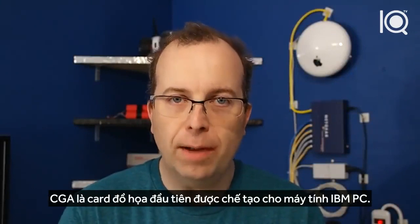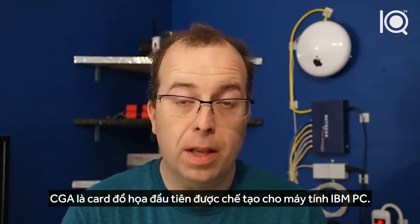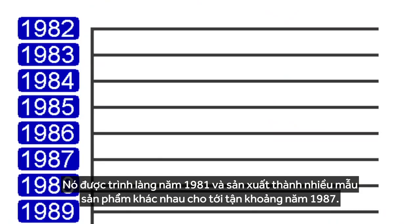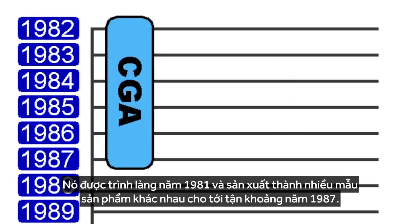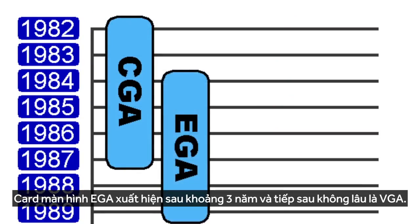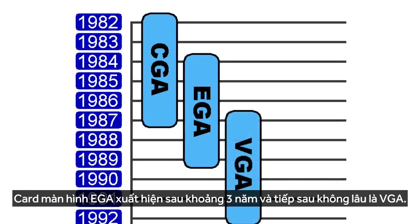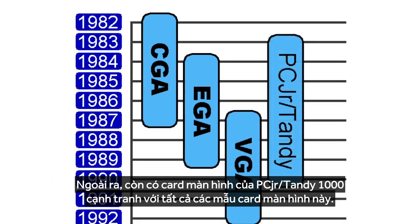CGA was the first graphics card made for the IBM PC. It came out in 1981 and was produced in various forms to approximately 1987. EGA graphics came out about 3 years later and then VGA a few years after that. Also, there was the PCjr slash Tandy 1000 graphics that competed with all of these in the market.